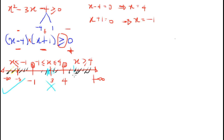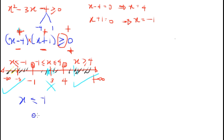Now let's test the region x greater than 4. Let's pick x equals 20: 20 minus 4 is 16, which is positive, and 20 plus 1 is 21, also positive. Positive multiplied by positive is positive, which satisfies the inequality. So the two regions that satisfy the inequality are x less than or equal to minus 1 or x greater than or equal to 4.